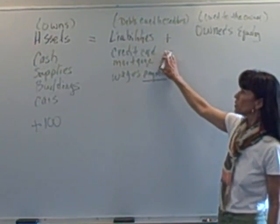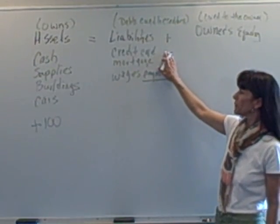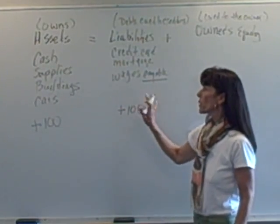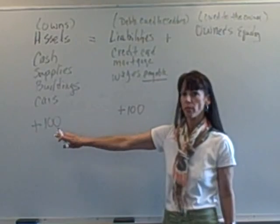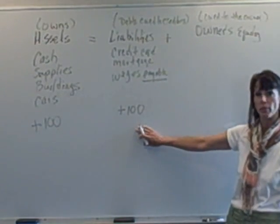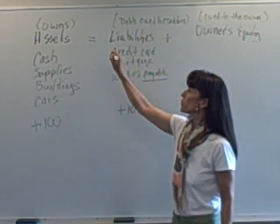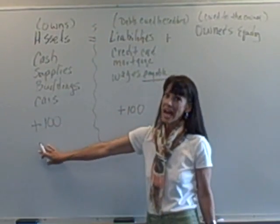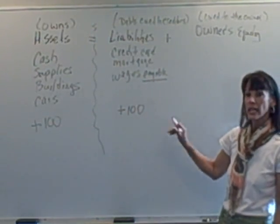They used like a credit card to buy it. So our liabilities went up by a hundred. So when we recorded this transaction, our assets went up by a hundred and our liabilities went up by a hundred. We always know that this accounting equation, the left has to always equal the right. Let's do one more.